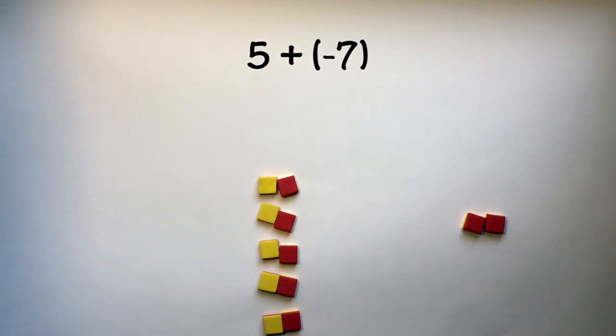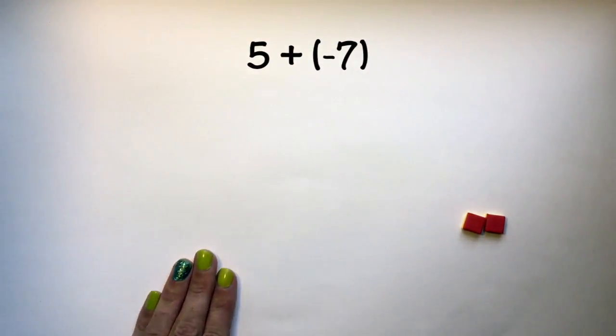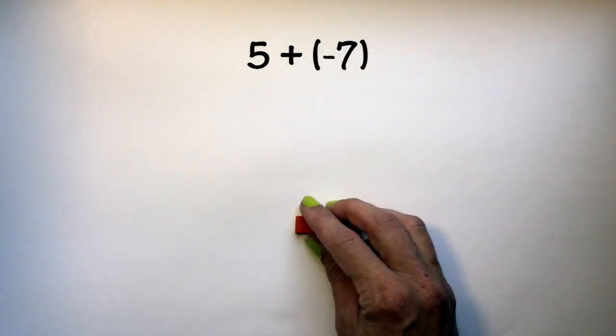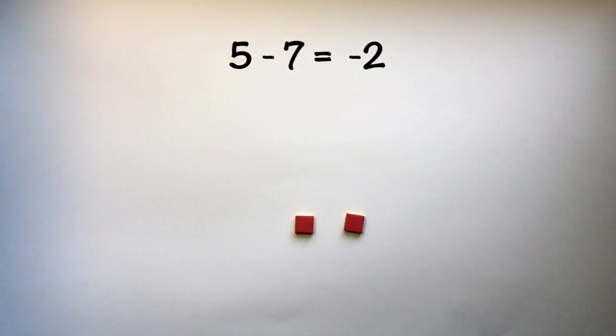Until there are no zero pairs left to create, I remove my zero pairs and see that I am left with negative 2.